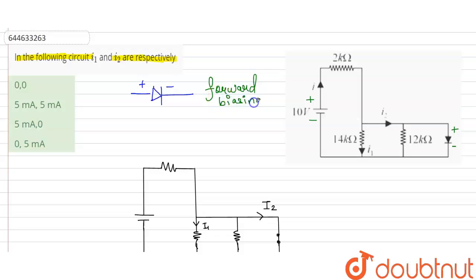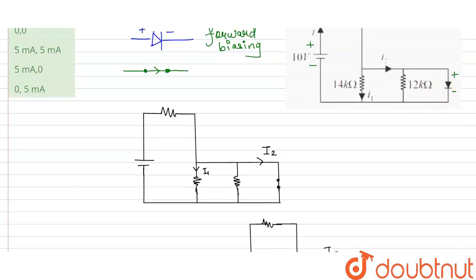In forward biasing, our diode can be replaced as no resistance wire. So our diode is like this and it will allow the full current to flow through it. Now this circuit can be equivalent to this circuit because the diode is replaced by the zero resistance wire.